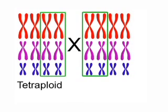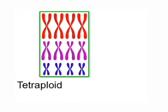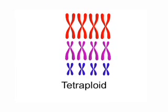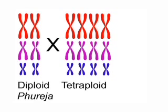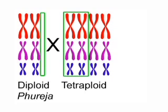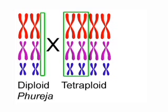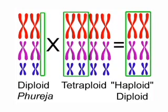Breeders have a few special techniques to navigate up and down ploidy levels. To go from tetraploid to diploid plants, breeders have to reduce the number of chromosome copies by half. To do this, they can use one of several diploid phureja species to pollinate the tetraploid. The sperm cells in the phureja group will not fertilize the egg, but will allow the embryo to develop. The resulting haploid seed will have two copies of each chromosome, half the number of its parent. When grown, these can cross with other diploids.